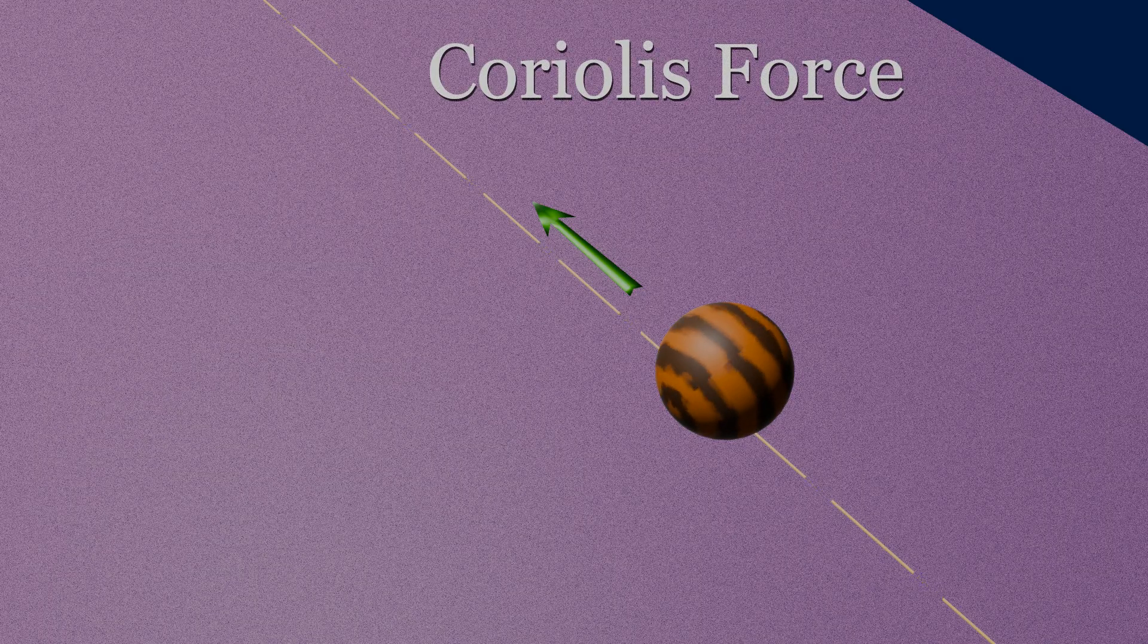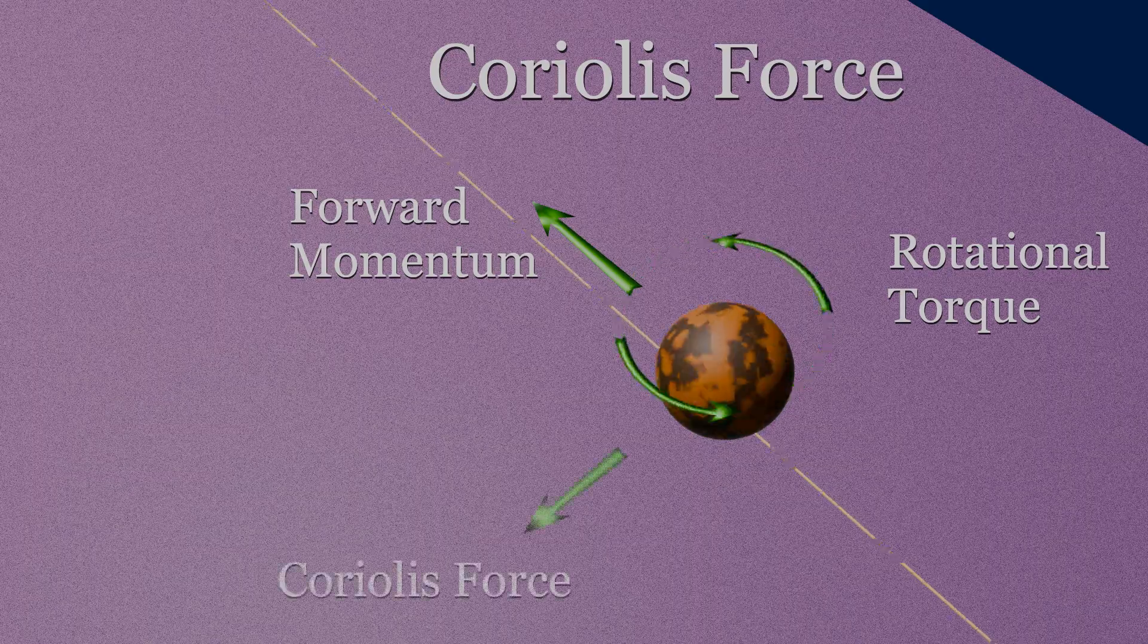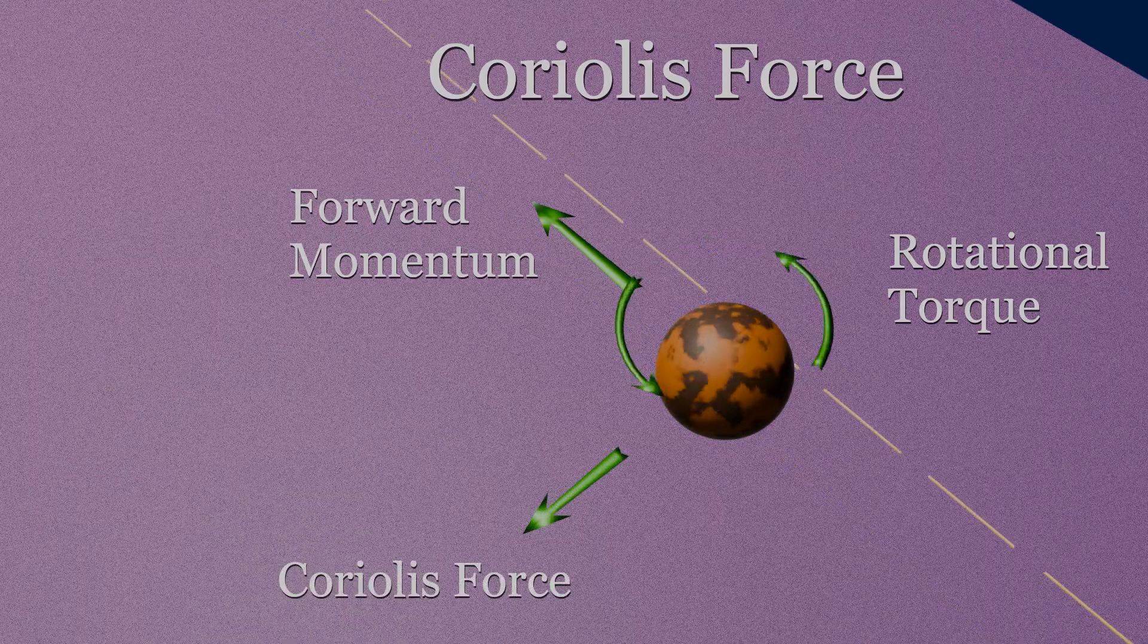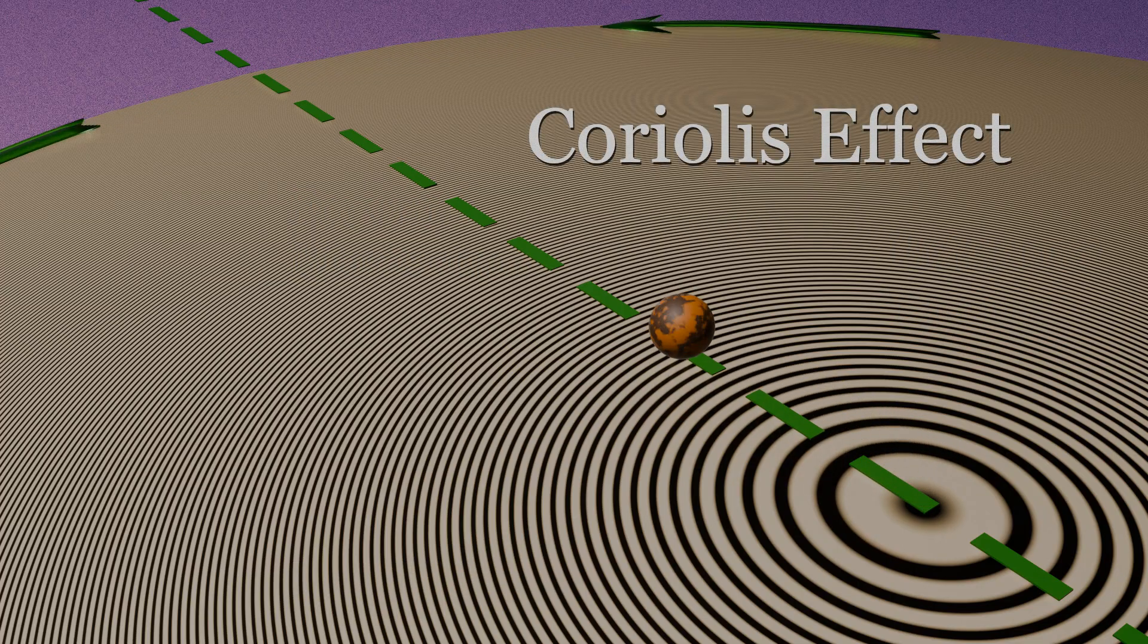The Coriolis force is what causes the lateral movement of an object moving in a straight line when acted upon by a rotational force. If you roll a ball on a spinning disc, it will move in a curved path along the disc, secondary to the ball's inertia. This is the Coriolis effect.